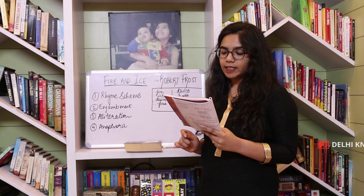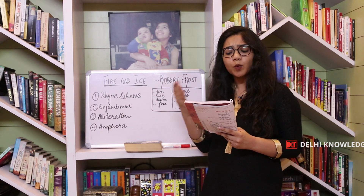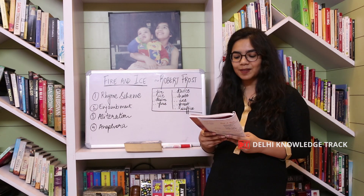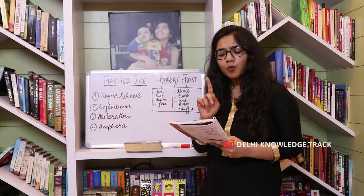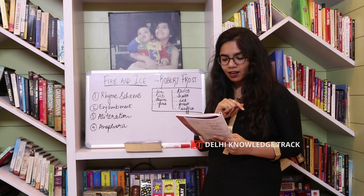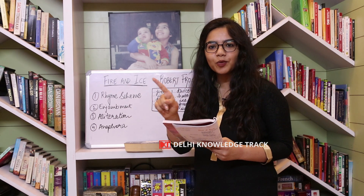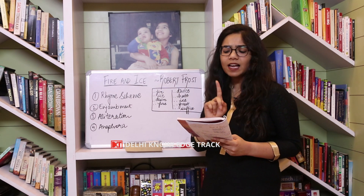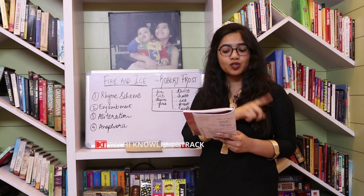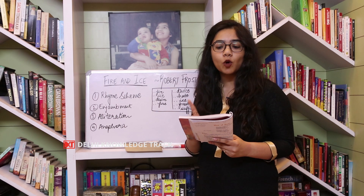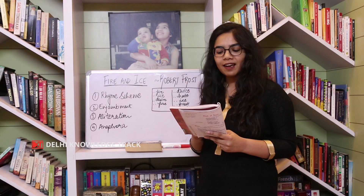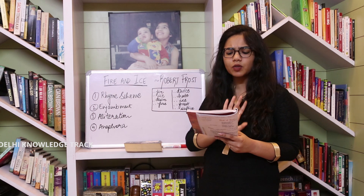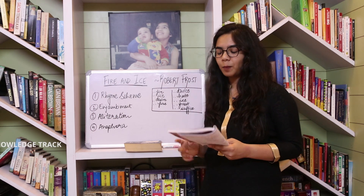So the poem goes like this: 'Some say the world will end in fire, some say in ice. From what I have tasted of desire, I hold with those who favor fire. But if it had to perish twice, I think I know enough of hate to say that for destruction, ice is also great and would suffice.'